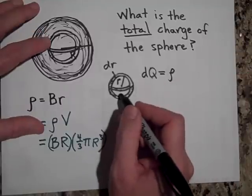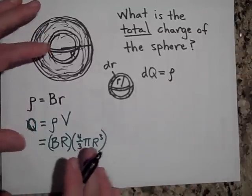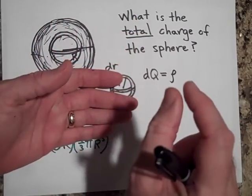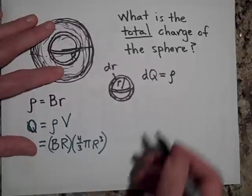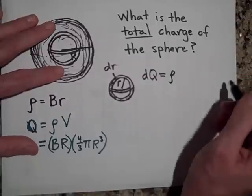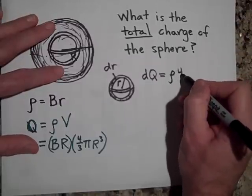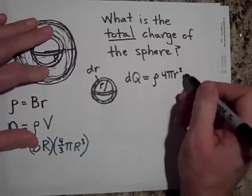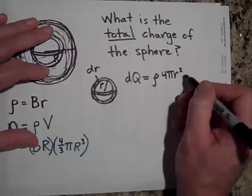Now, what is the volume of a shell? What it is, is it's the surface area of a sphere times the little height, DR. And so that's going to be the surface area of a sphere is 4 pi r squared, and then times the surface area, the thickness of that, so DR.